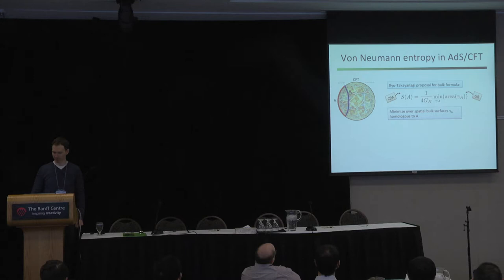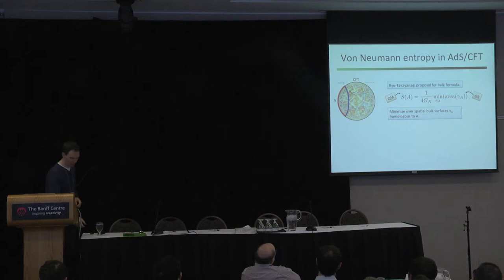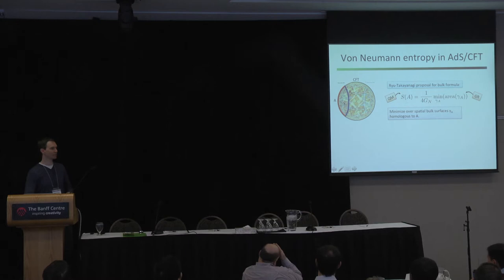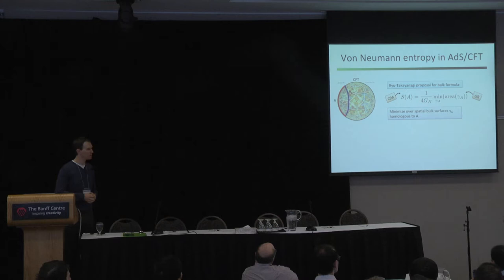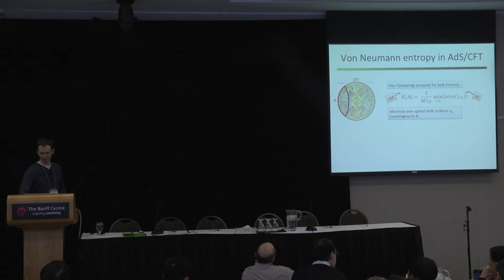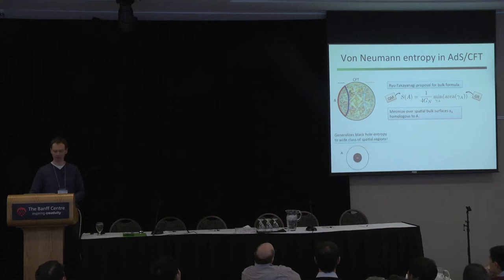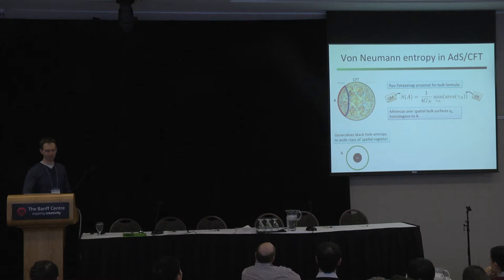This is an easy calculation — just calculus of variations from classical mechanics. It may come as a surprise that doing calculations in general relativity can be easier than in quantum mechanics, but this is often the case. The actual formula is one-quarter times Newton's constant times the area of the minimal surface. More generally, you minimize over bulk surfaces homologous to A — meaning that together A and the minimal surface gamma_A are the boundary of some bulk region.